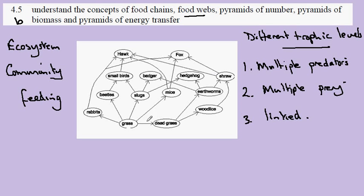Our producer is grass. Our primary consumers include the rabbit, the beetle, slugs, mice, and in this instance the woodlice would also be considered a primary consumer.